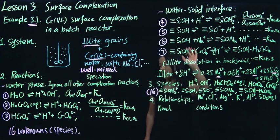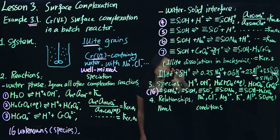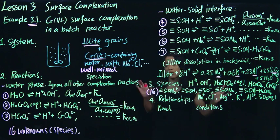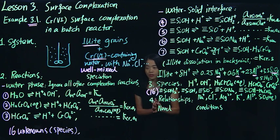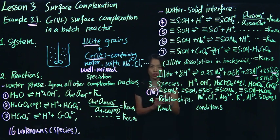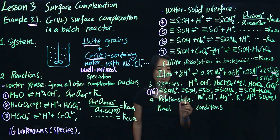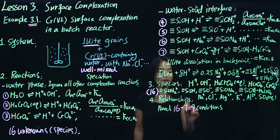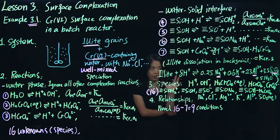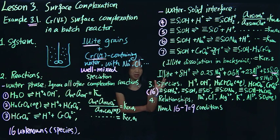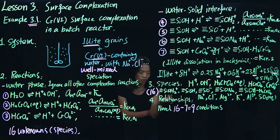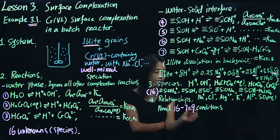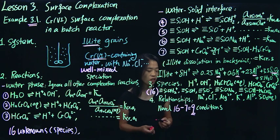We already have 16 unknowns. We know we have 7 different relationships from the reactions we specified — reactions 1 through 7. Every time we specify one reaction, there's an algebraic relationship associated with it. So we have 16 minus 7 equals 9. We have 16 unknowns and 7 known relationships, meaning the activities are dependent on each other through those expressions, so we need to specify 9 additional conditions.